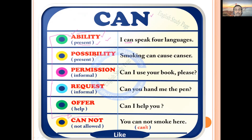The next use of 'can' is possibility in the present. For example: 'Smoking can cause cancer.' You can relate it with other examples: 'It can rain', 'It can be dangerous.' This is how we express possibility with 'can'. Then, in interrogative form, 'can' becomes permission — for example: 'Can I use your book?' — this is informal permission.